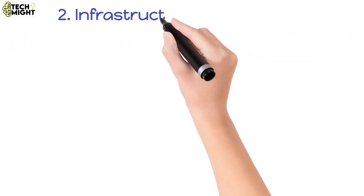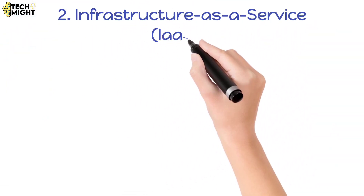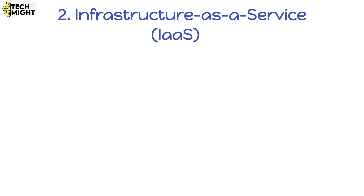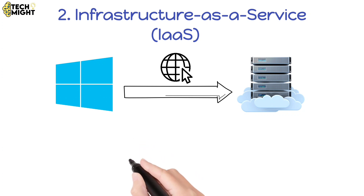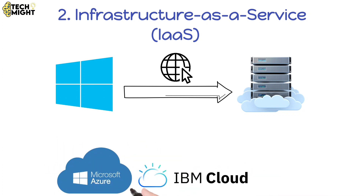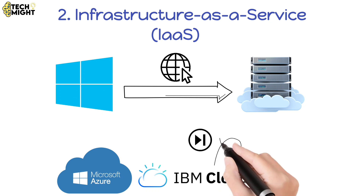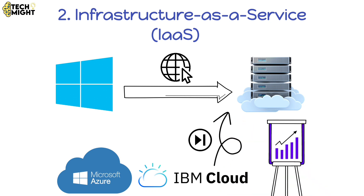Next in line is Infrastructure as a Service, IaaS. This one is about delivering everything from operating systems to servers over the internet. Companies like IBM Cloud and Microsoft Azure offer this, allowing you to skip the whole server buying process and get what you need on demand.